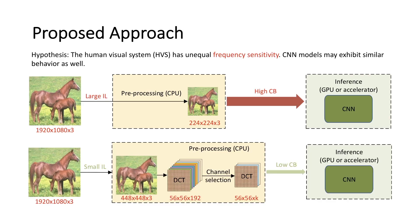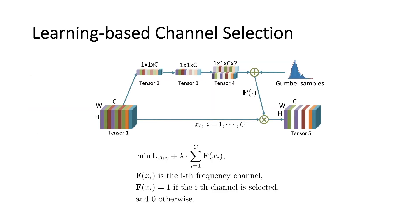In this work, we propose to use higher-resolution images at the input and prune the trivial frequency components to reduce the input data size. We propose a learning-based channel selection method to explore the relative importance of each frequency channel.